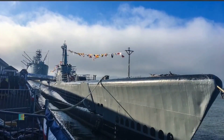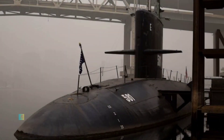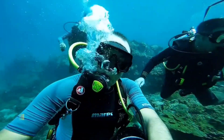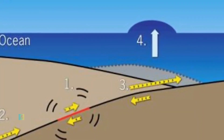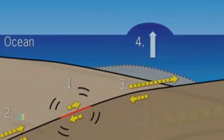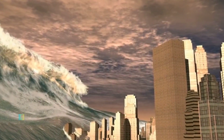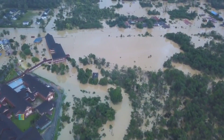Submarine Landslides: In addition to earthquakes, submarine landslides can also instigate tsunami formation. When underwater slopes become unstable due to factors such as volcanic activity, sediment saturation, or tectonic forces, large masses of material can rapidly slide into the ocean. This displacement of water creates waves that propagate across the ocean, evolving into tsunamis.